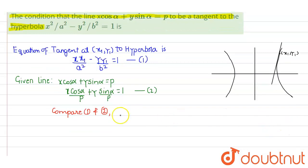Compare equations 1 and 2. If we compare the coefficient of x, we will get x₁/a² equal to cos α/p. So from here what will be the value of x₁? It will be a² cos α/p. That is equation 3.